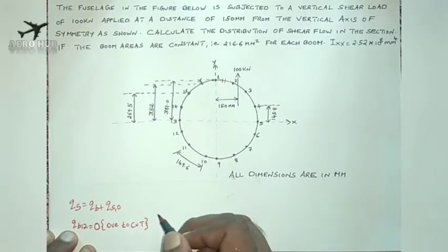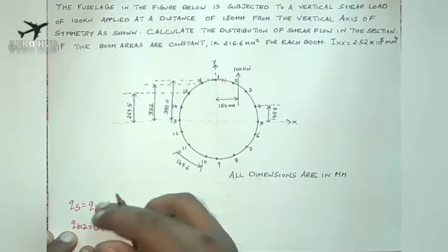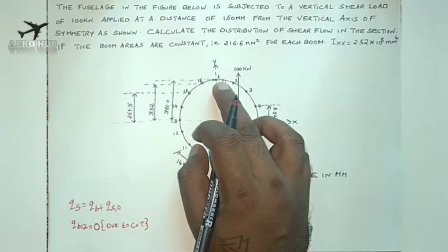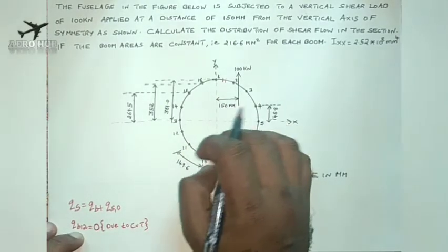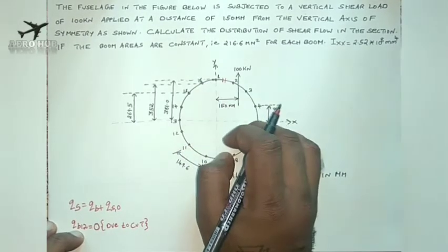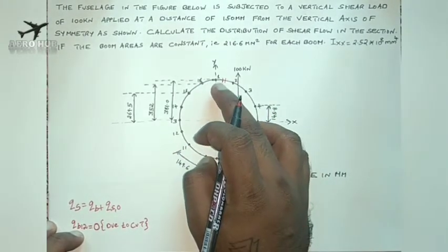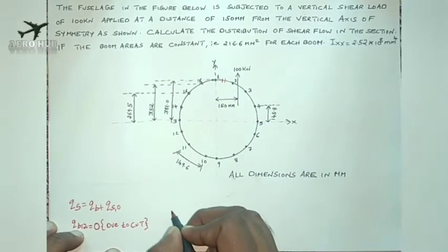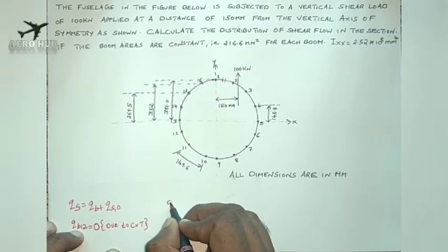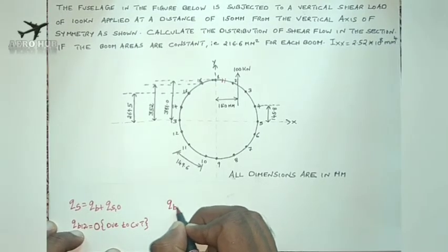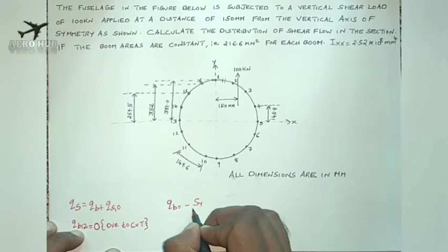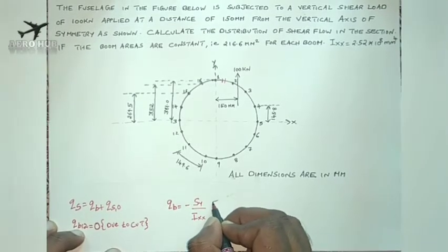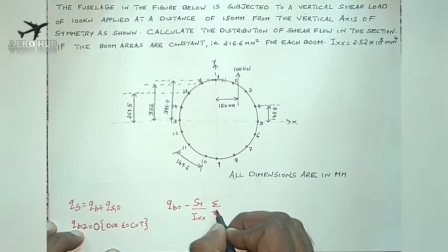We are aware about the formula for QB — the basic shear flow. When you make a cut on the skin panel 1-2, this section becomes an open section. This section is actually a closed section, but when you make a cut on portion 1-2, it becomes an open section. For an open section, the value of shear flow is: QB equals minus SY divided by IXX, into summation from R equals 1 to N of BR times YR.